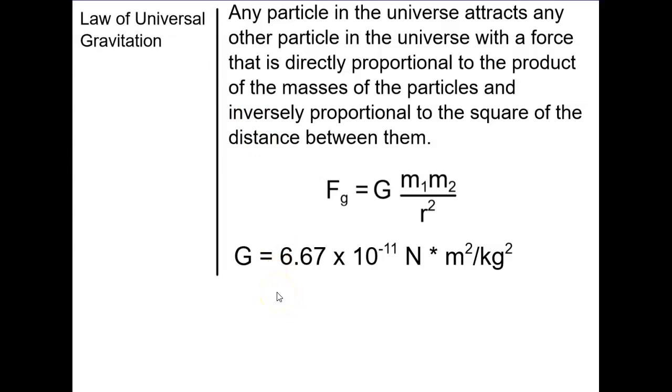So the idea of gravitational force is governed by the law of universal gravitation. The law of universal gravitation states that any particle in the universe attracts any other particle in the universe with a force that is directly proportional to the product of the masses. So you would multiply the two masses of the particles and inversely proportional to the square of the distance between them. So that's what this r is, it's the distance between the two objects squared.